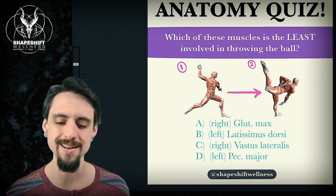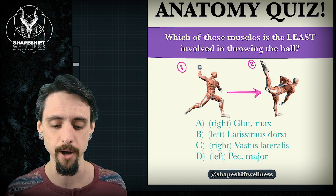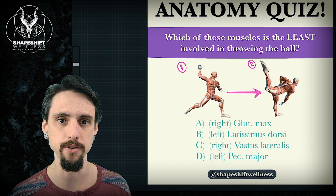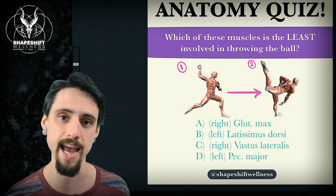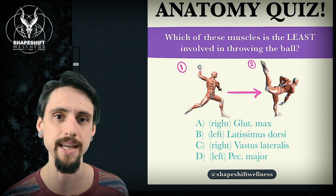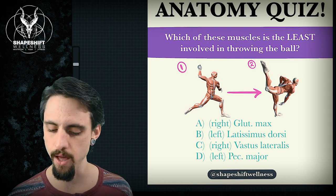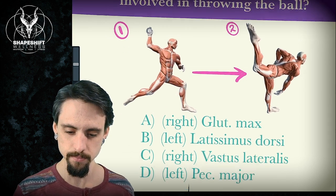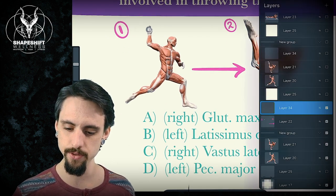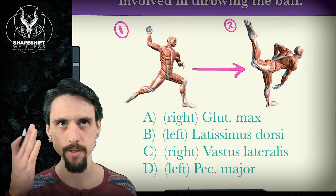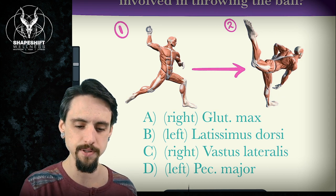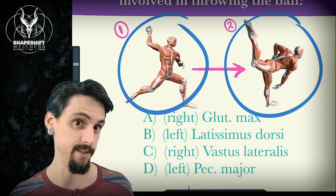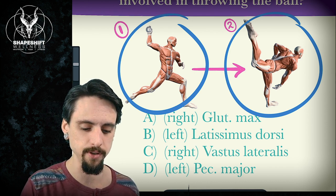All right, let's get to it. So which is not really involved in pitching a baseball? Pay attention to the right and left sides, because some of these muscles are going to be super active on one side and not active at all, or very, very inactive relatively on the other side. So we've got the right glute max. Some easy ways to sort of just think about this is like, look at position A and look at position B. And if the joint moved, maybe a muscle did something. So is it the muscle you want or not?